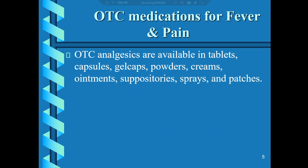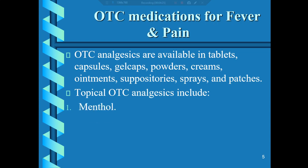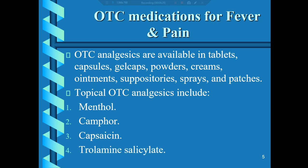OTC analgesics are available in many pharmaceutical dosage forms including tablets, capsules, gel caps, powders, creams, ointments, suppositories, sprays, and patches. Topical OTC analgesics include menthol, camphor, and capsaicin, beside trolamine salicylate. Menthol, camphor, and capsaicin are natural-occurring organic plant-derived substances. They are effective as analgesics, used topically, and available as OTC medication to relieve mild to moderate pain.